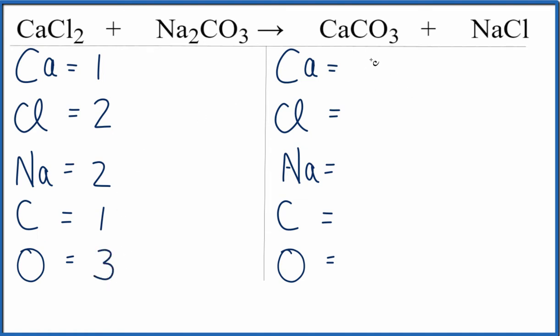On the product side, we have one calcium. Let's go in the same order we have over here. So we have chlorines, one of those. Sodiums, we have one. The carbons, we have one. And the oxygens, we have three.